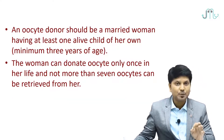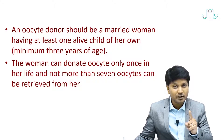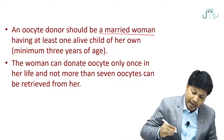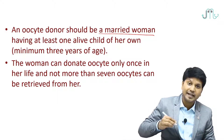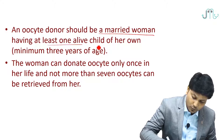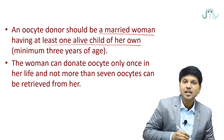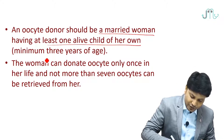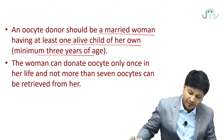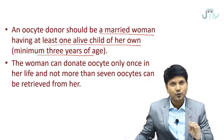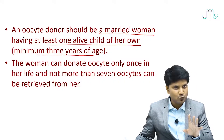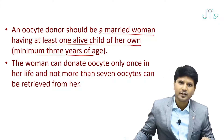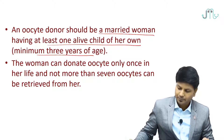The oocyte donor should be a married woman — very important. She should be a married woman and should at least have one child of her own, and that child should be at least three years of age. The woman can donate oocyte only once, and a maximum of seven oocytes can be taken from her.